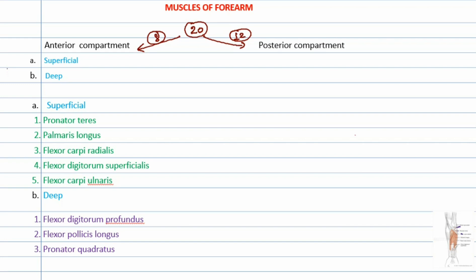The muscles of the anterior and posterior compartment are divided into superficial and deeper planes by a fascia in the forearm. In the anterior compartment, there are 5 muscles in the superficial plane and 3 muscles in the deeper plane. In the posterior compartment, we have 7 muscles in the superficial plane and 5 muscles in the deeper plane.